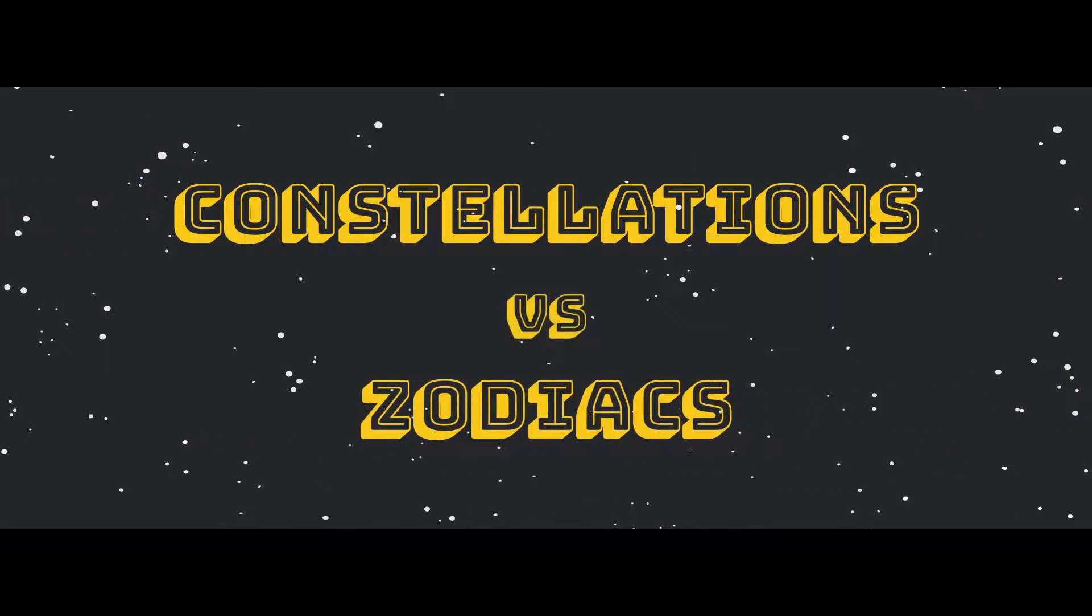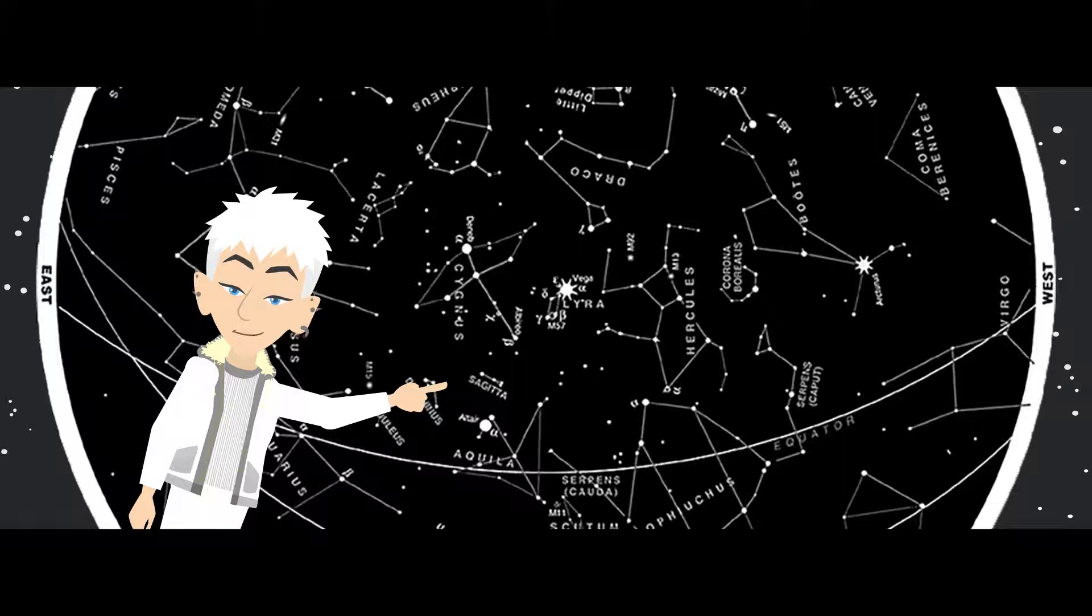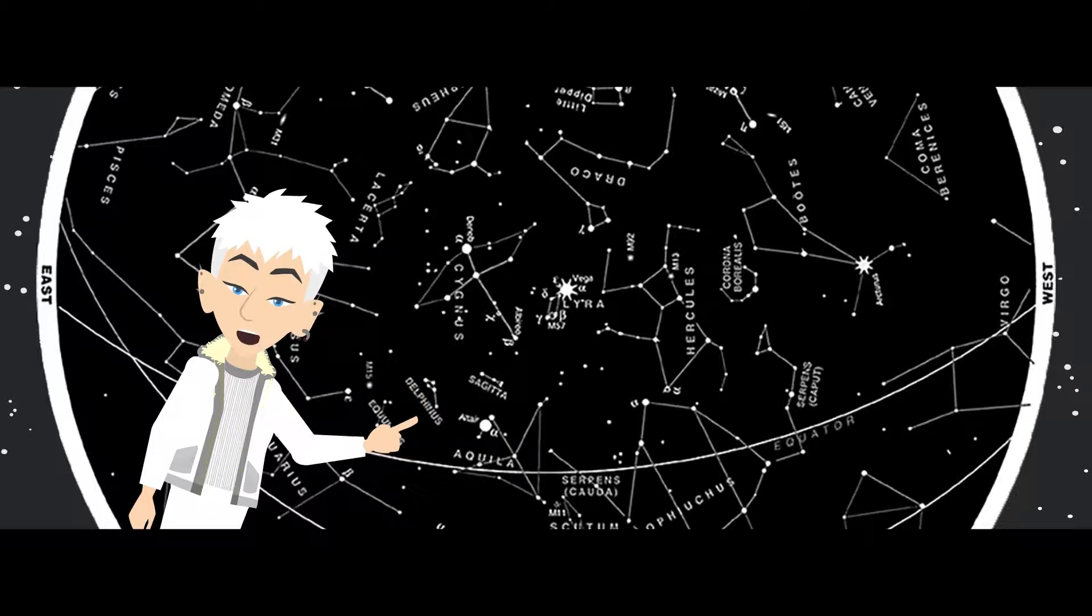One thing to keep in mind when trying to understand astrology is the difference between constellations and zodiac signs. Constellations are based on the locations of the fixed stars in the sky. They are different in sizes and don't fall in perfectly with the zodiac circle.